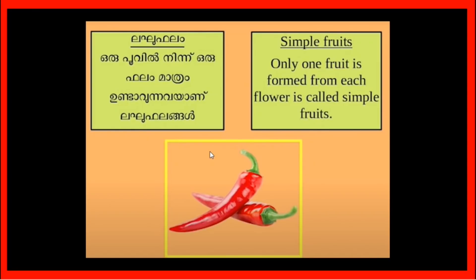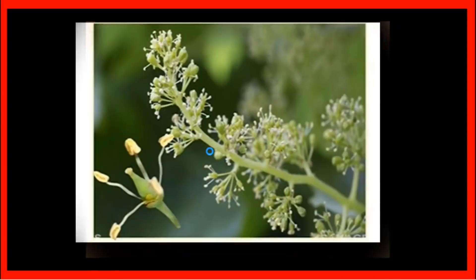The first thing is: one seed is formed from each flower. It's called Simple Fruits. Only one seed is formed from each flower — it's called Simple Fruits.